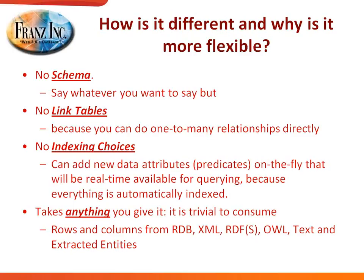How is a triple store different from a graph database? In a graph database, nodes and links only mean something within the context of that graph. Triple stores and RDF are different because you express the graph as triples — subject, predicate, object, and optionally a fourth element — where each element is a persistent URI. For example: Jans, Toks, Atlanta — each is a persistent URI, and you could have more information about each on the web. This allows you to very easily link datasets together just by virtue of having persistent URIs, which is the basis of the whole Linked Open Data cloud.